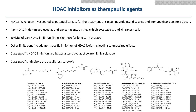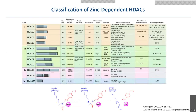Therefore, in the last decade, the discovery of isoform-selective inhibitors has become an attractive area in order to identify compounds with better selectivity and lower cell toxicity. The HDAC isoforms discussed here require a zinc ion in the bottom of the pocket to catalyze the deacetylation reaction.